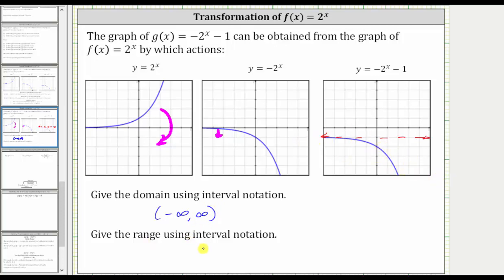And now the range is the set of all possible outputs or y values. So looking at the graph, notice how the function values approach y equals negative 1 and then go down from there and approach negative infinity.